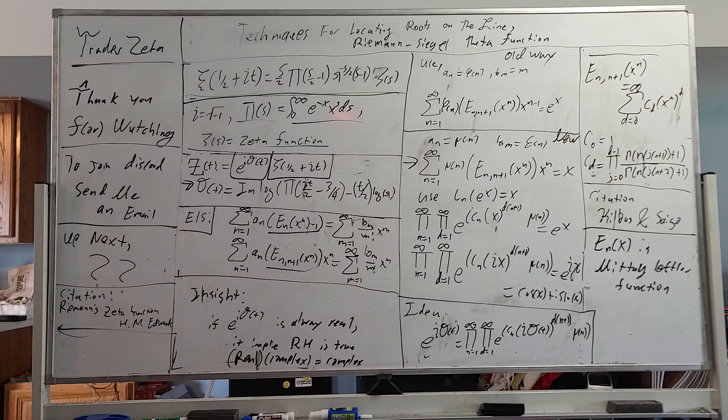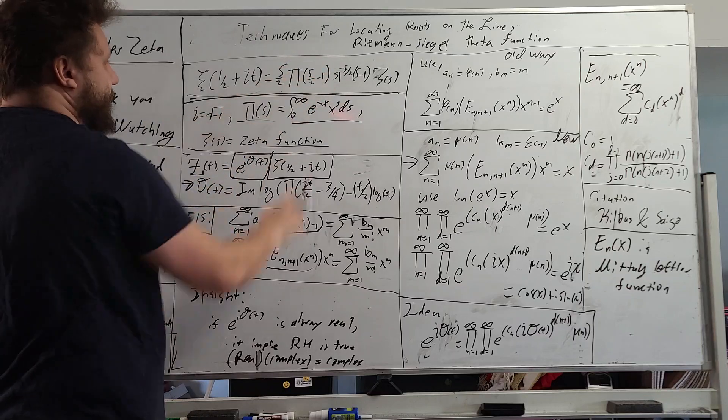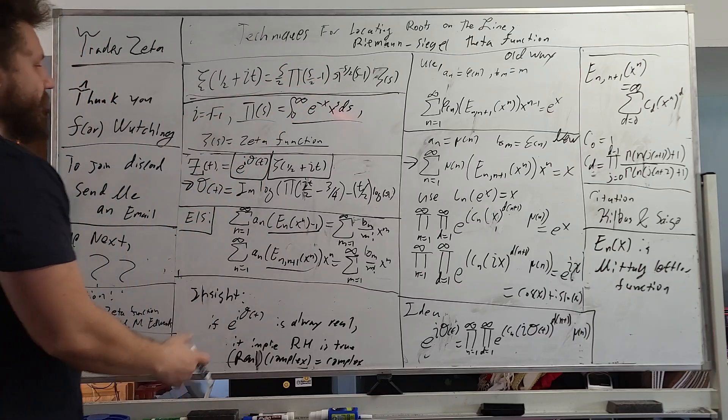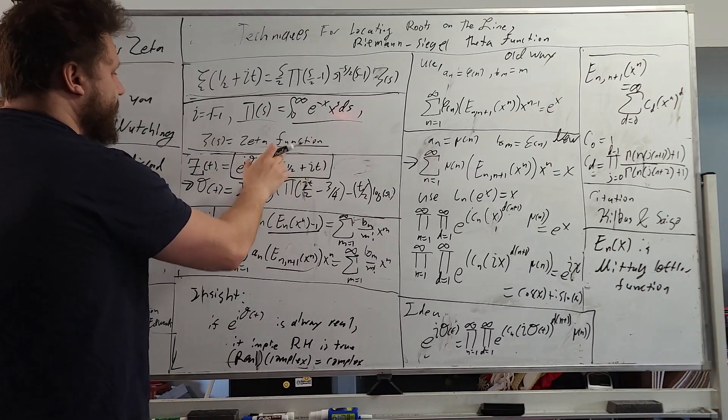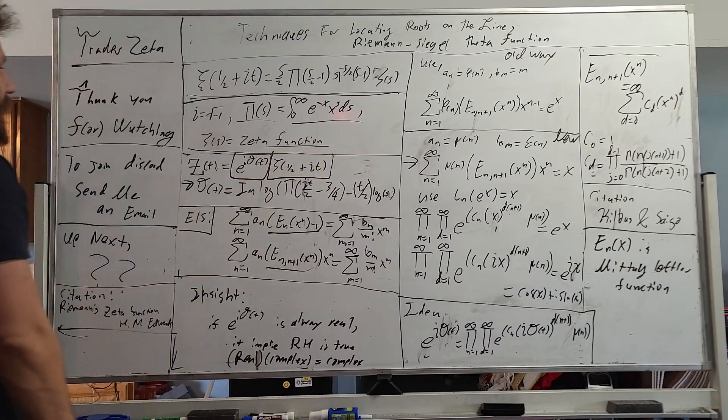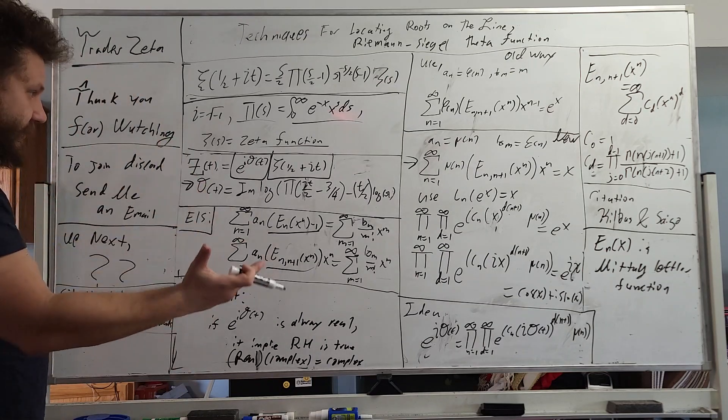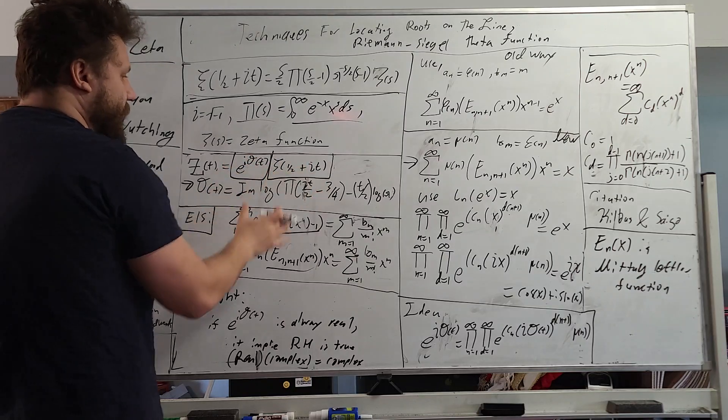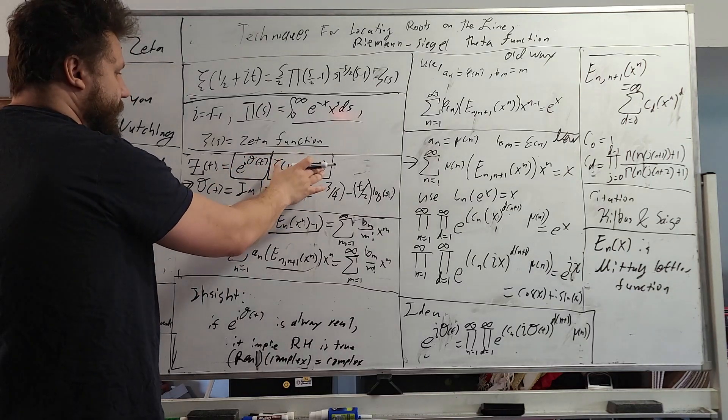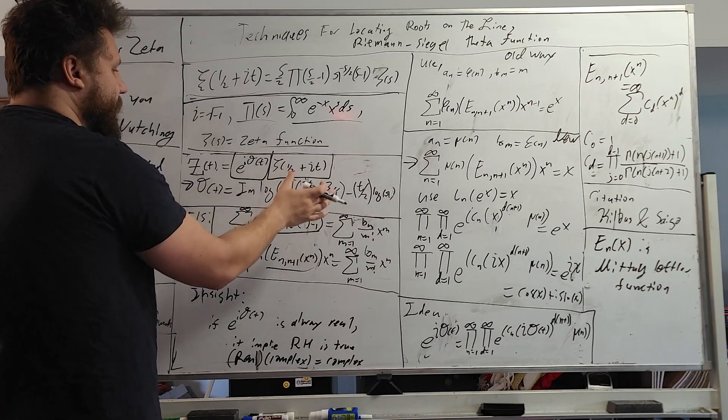So what's the whole idea? The whole idea is that we can more or less factor this side, we can bring it up, and we get E to the i theta t, and we have Zeta one half plus it on the right. Now, what we're going to do is think about this conceptually. We have, say for example, this was real, and this is always complex, like the non-trivial zeros of the Riemann Zeta function are always complex.